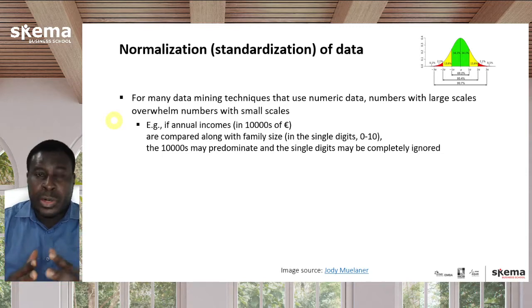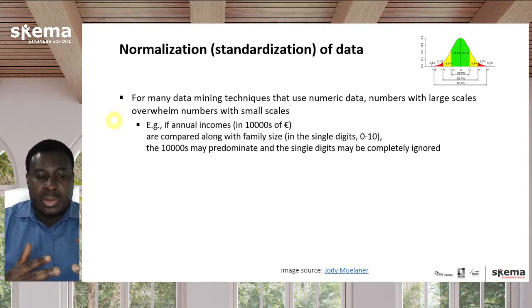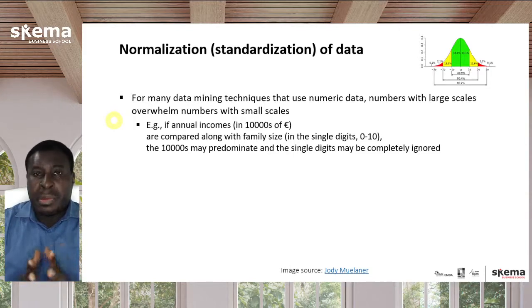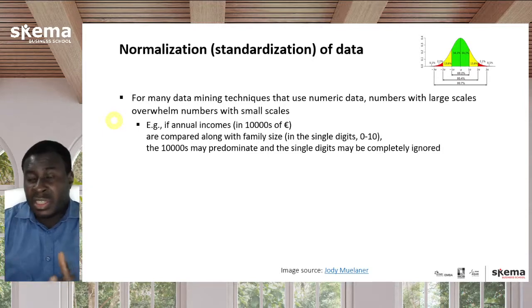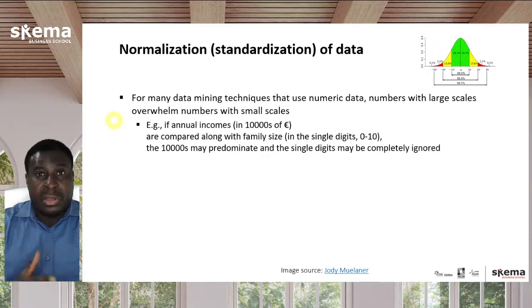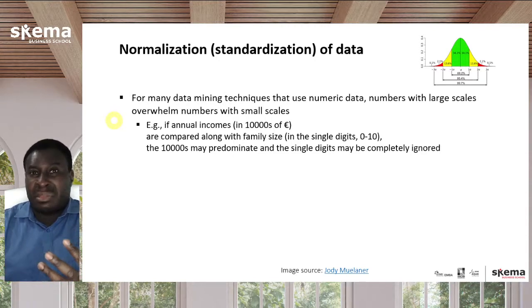For instance, you might have a data set where you have people, perhaps customers, and you have income information ranging from maybe €10,000 to €100,000 in your data set. But then you also have their family size. Family sizes might be 1, 2, 3, 5, 6, maybe even up to 8 or 9 as the largest number. So you have income going from €10,000 up to €100,000, and family size going to a maximum of 8 or 9.